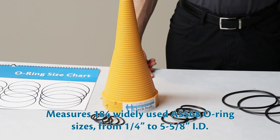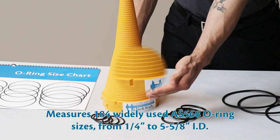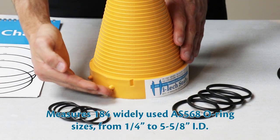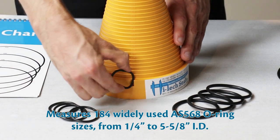Our o-ring cone measures 184 widely used AS568 sizes ranging from ¼ inch to 5 5/8 inch ID. Use the notches at the bottom of the cone to determine the cross section of the o-ring. The o-ring should not be loose in the notch.